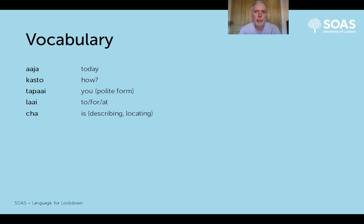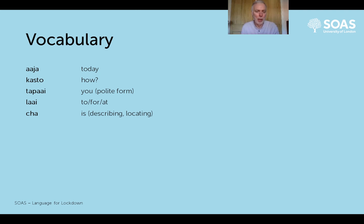Then we come to our first little verb. The verb 'to be' in Nepali is interesting and a little challenging in the early weeks of learning the language, in the sense that there are two functions. One is what we call the 'cha' line of verbs to be, and the other is the 'ho' line. 'Cha' simply means 'is', but only in the sense of describing something, saying it is in a particular place - locating it, or stating that it exists or is available.